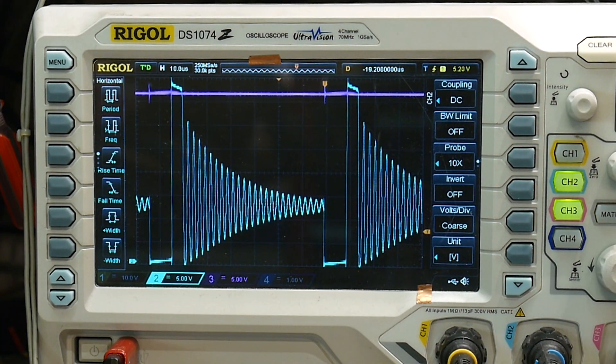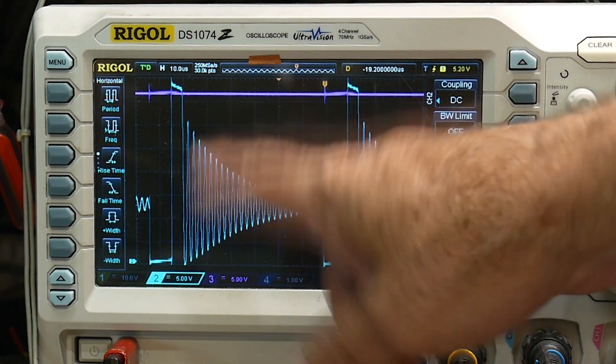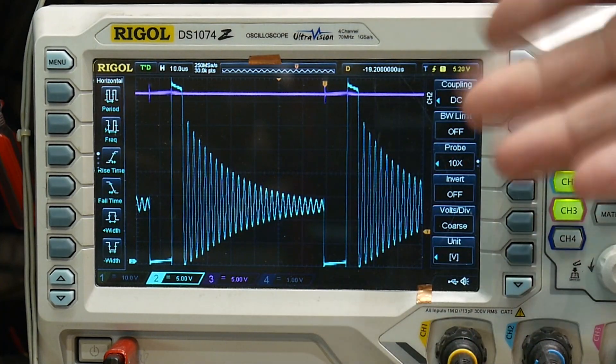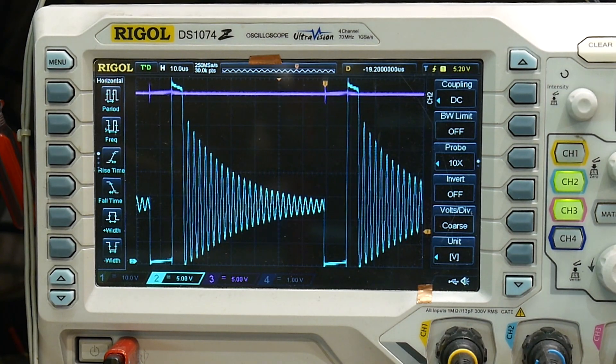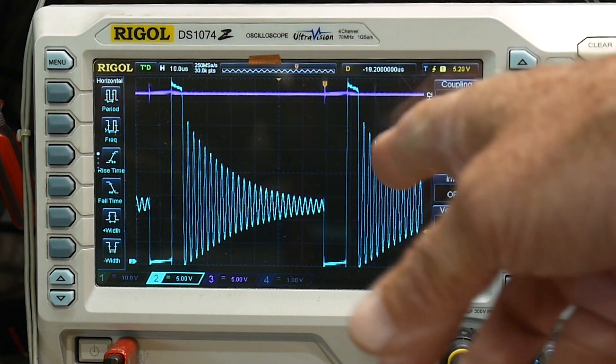So one of the things that's interesting is why does it go boing? Why does it ring? Why does it do that? Whenever you have something that oscillates you have to have some type of circuit and you need an inductor and you need a capacitor.